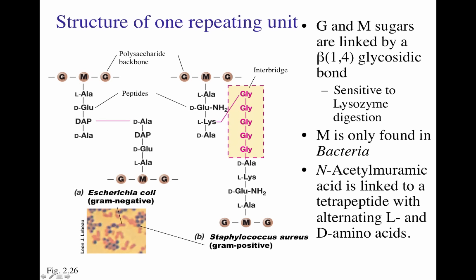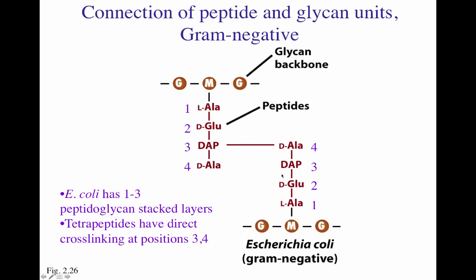The repeating unit is different in gram-positive bacteria. Both G and M sugars are linked again by a beta-1,4 glycosidic bond, which is sensitive to lysozyme digestion. N-acetylmuramic acid is linked to a tetrapeptide with alternating L and D amino acids, as shown in both gram-positive and gram-negative. However, gram-positive cell walls do not have diaminopimelic acid — they only have an L-lysine molecule. To the L-lysine molecule, there is the addition of an interbridge formed by five different glycines.